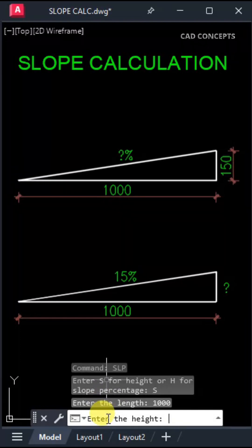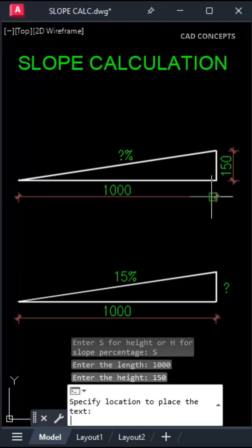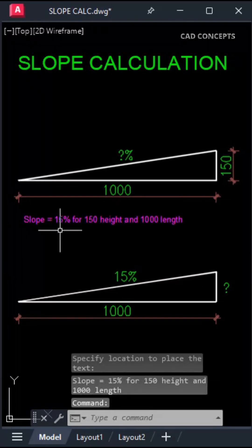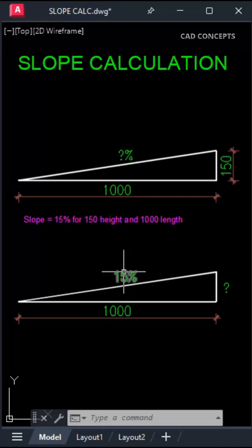Input length 1000 unit, input height 150. Click here. You are getting slope percentage which is 15, same as it is.